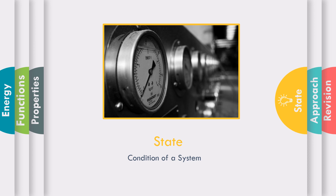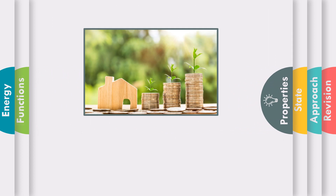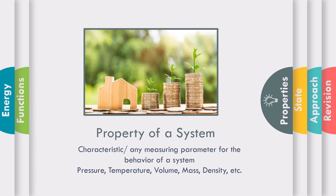What is thermodynamic state? Thermodynamic state means the condition of a system. Next comes the properties of a system. Property of a system means any quantity which gives the characteristics of that system — it is nothing but a property. In other words, a property of a system is any measuring parameter for the behavior of that system.